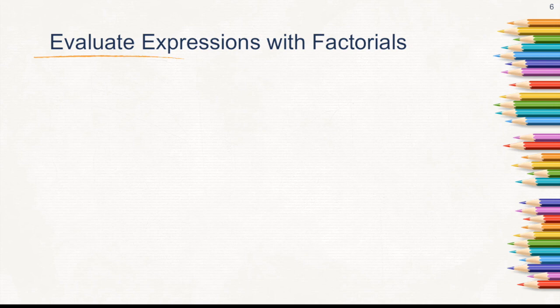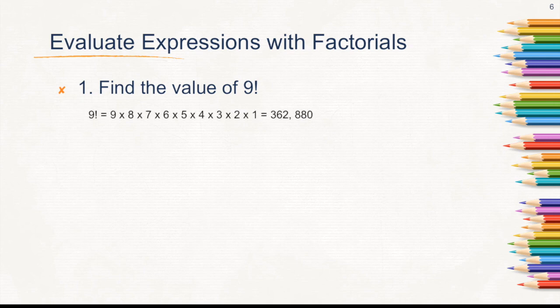Evaluate expressions with factorials. First one: find the value of 9 factorial. Based on the definition, it is 9 times 8 times 7 times 6 times 5 times 4 times 3 times 2 times 1, until you reach 1. Multiply all of these factors and you will get 362,880.